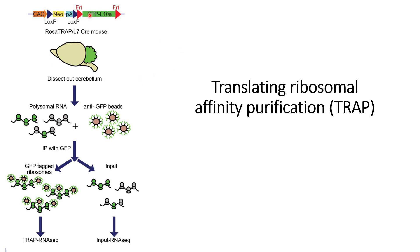TRAP does require the generation of transgenic animals or specific cell lines transfected with a particular plasmid, but this is not considered a major problem.